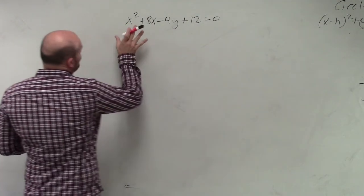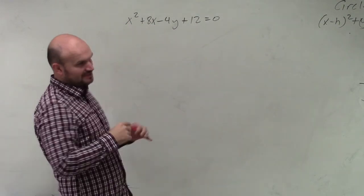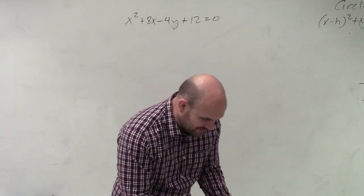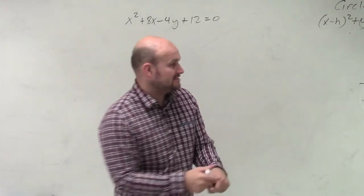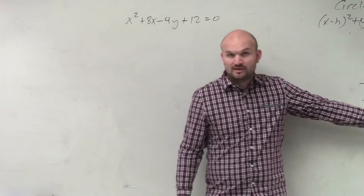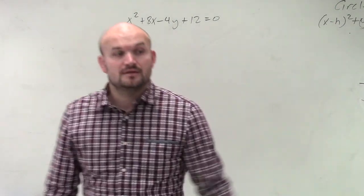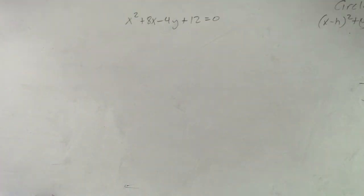All right. Here's our equation. We need to identify the vertex, the directrix, and the focus. But the only way we know how to do that is if it's in one of these formats over here. So what we need to look at is how are we going to rewrite that?